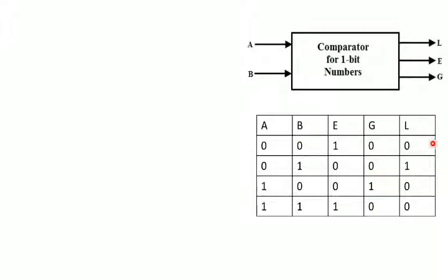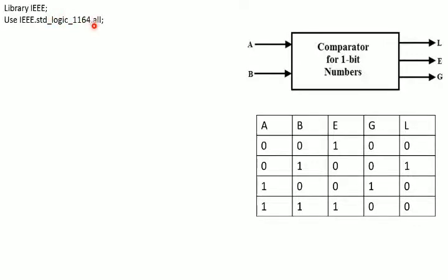Now depending upon these conditions, let us see how to write the VHDL code. We will start with defining the first element called library. We write library IEEE, then the statement use IEEE.std_logic_1164, which is the standard package we are using, with the extension dot all, indicating we are using all components from std_logic_1164.